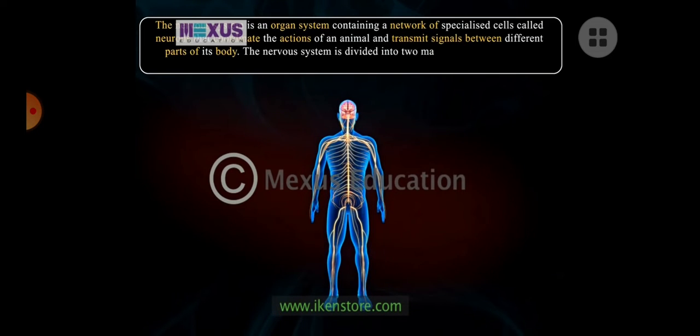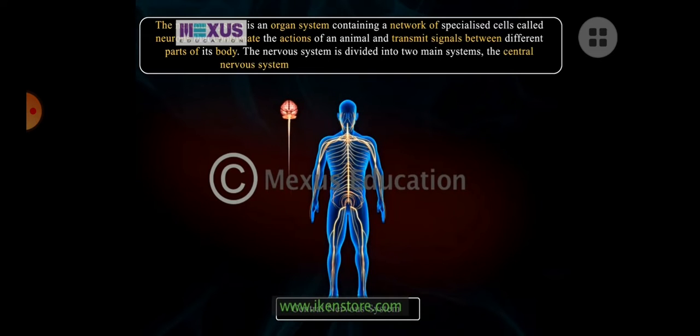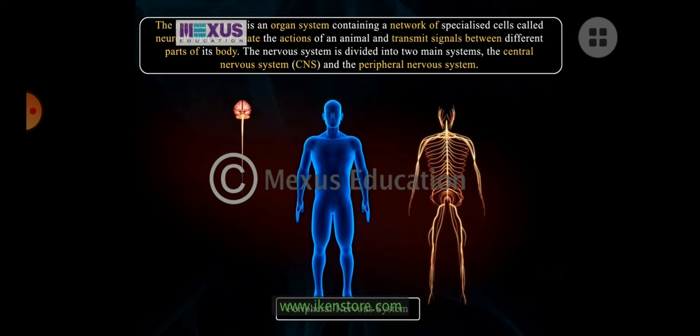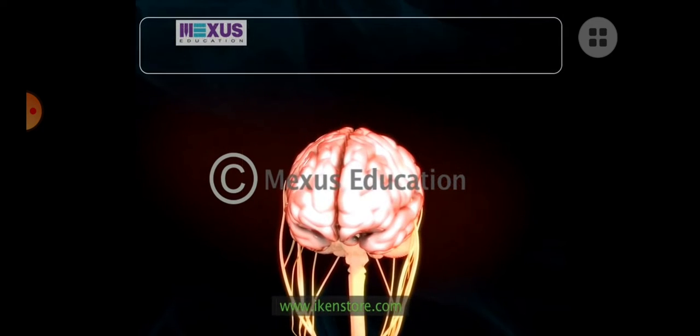When you talk about your nervous system, it is basically divided into two main. One which is located in the center, that's central nervous system, your brain and spinal cord and the rest is the peripheral nervous system.